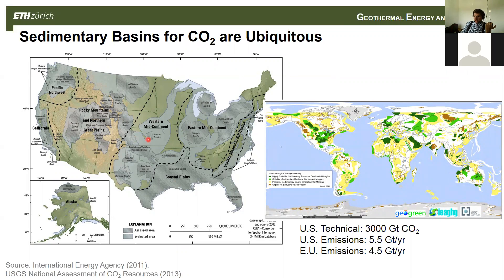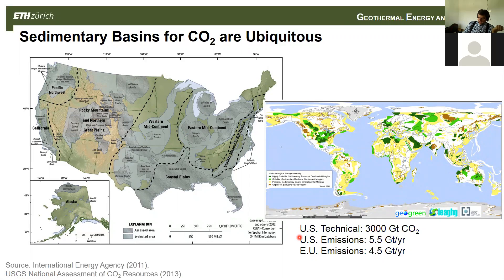Here's a map showing the sedimentary basins targeted for CO2 storage. The left is a map from the United States Geological Survey, which did a comprehensive study of all CO2 storage sites in the U.S., and on the right is a world map showing storage sites as well. Basically, these basins cover maybe a third or half of the U.S. and are available everywhere. In the U.S., the technical storage capability for CO2 in these saline aquifers is something like 3,000 gigatons of CO2 — and just for comparison, the European Union generates about five gigatons per year. So there are many years' worth of CO2 storage capacity, and these reservoirs will be used for CO2 storage. CO2 geothermal can utilize that.